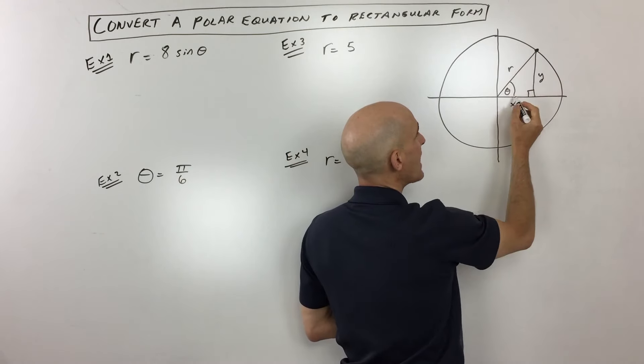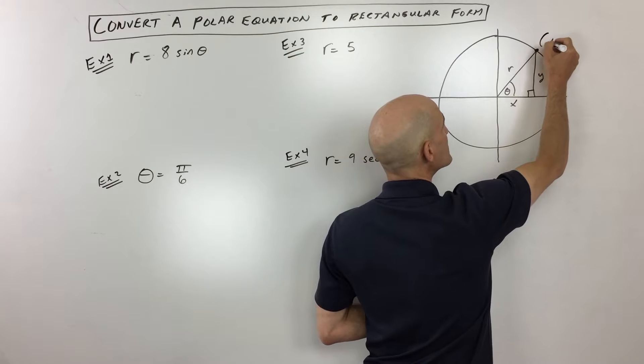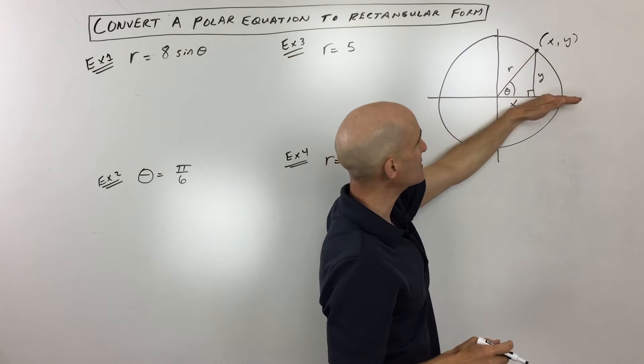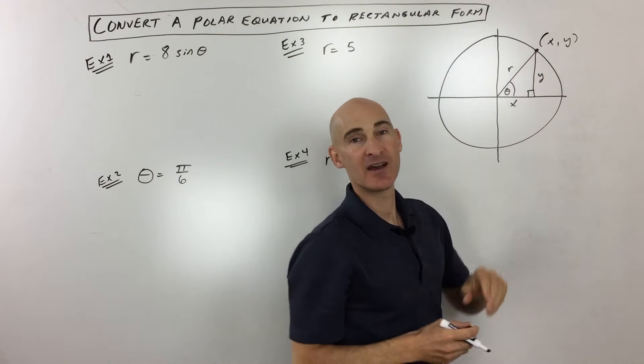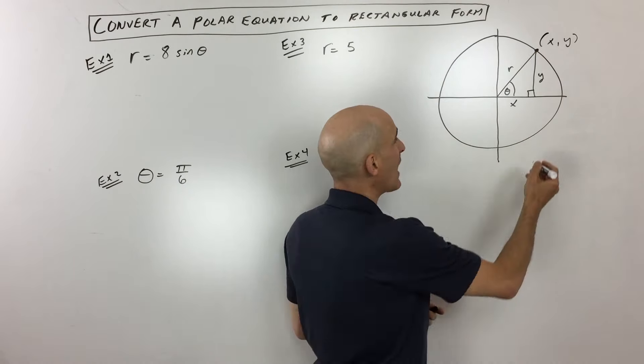The connection here is illustrated by this diagram. To get to this point, you're going to go right x and up y, so that's x comma y. But the other way to locate this point is to have a radius and then you rotate theta, that angle, to get to that point. Either way, you end up at the same spot.